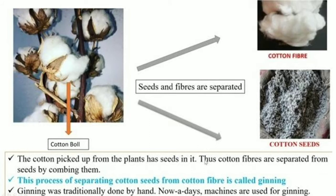The cotton picked from the plants has seeds in it. Thus cotton fibers are separated from seeds by combing them. This process of separating cotton seeds from cotton fiber is called ginning. I want all of you to remember the definition of ginning: the process of separating cotton seeds from cotton fiber is called ginning. Ginning was traditionally done by hands but nowadays machines are used for ginning.